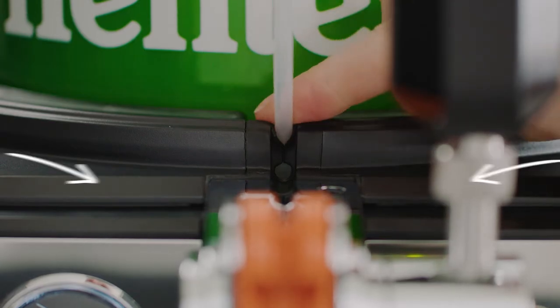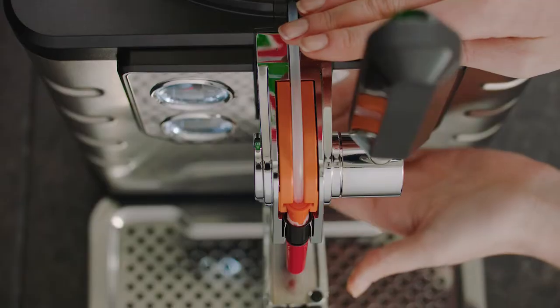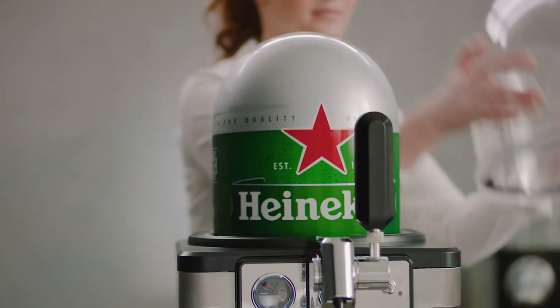Make sure that the keg's tube is correctly inserted and aligned to the orange groove. Close the lid. Remove the red cap and place the dome over the keg.